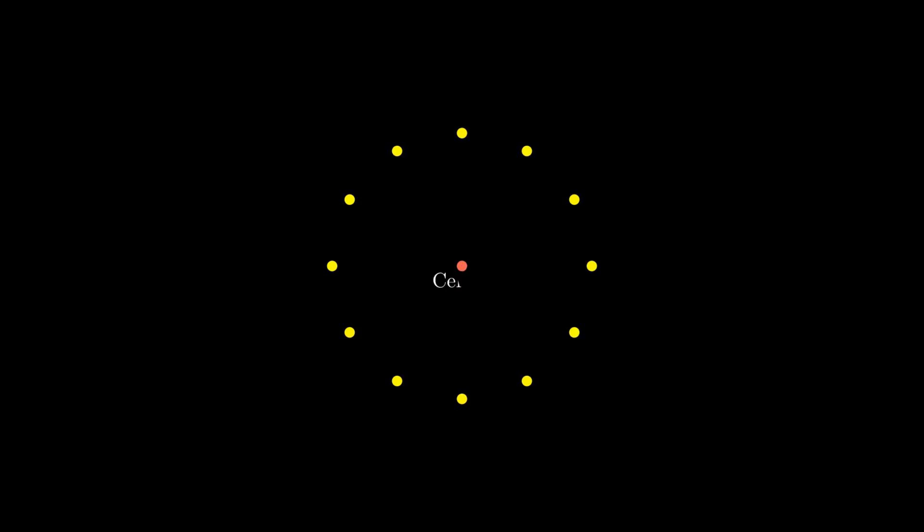A circle is defined as the locus, that is the collection of points that are equidistant from a given fixed point. This fixed point is commonly called the center of the circle.